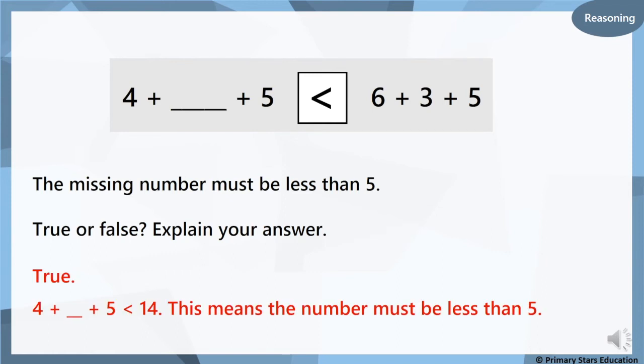Okay, it is true. 4 add something add 5 is less than 14 means the number must be less than five. Otherwise, the symbol doesn't make sense.